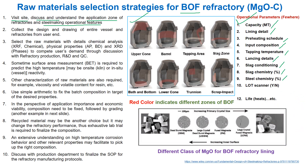Point two: collect the design and drawing of the entire vessel and refractories from the user end. Point three: select the raw materials with detailed chemical analysis, physical properties, and XRD to complete users' demands through discussion with the refractory production team, R&D, and quality control team.